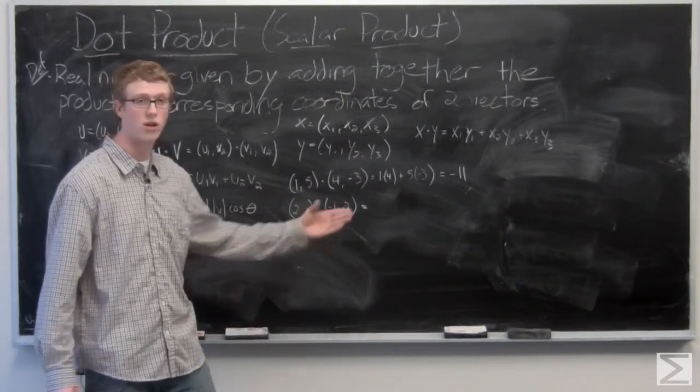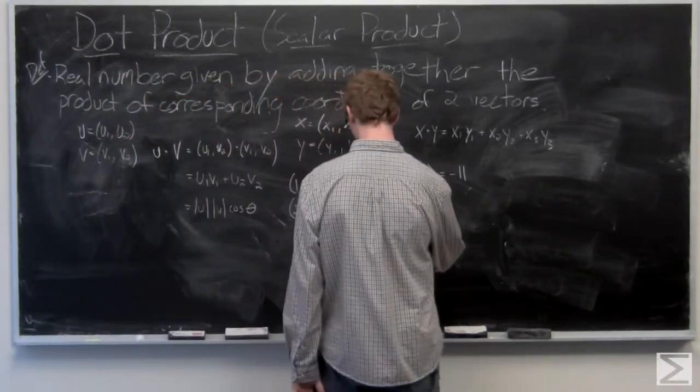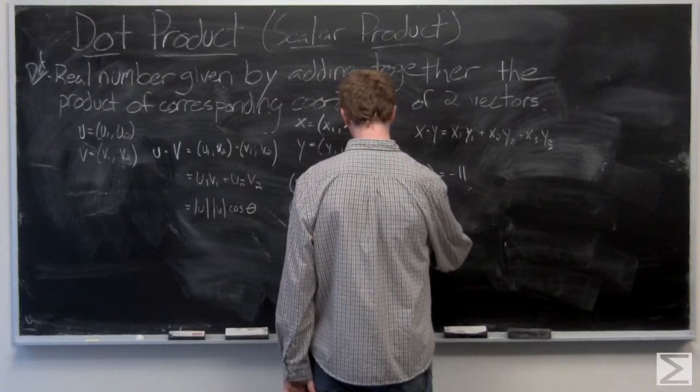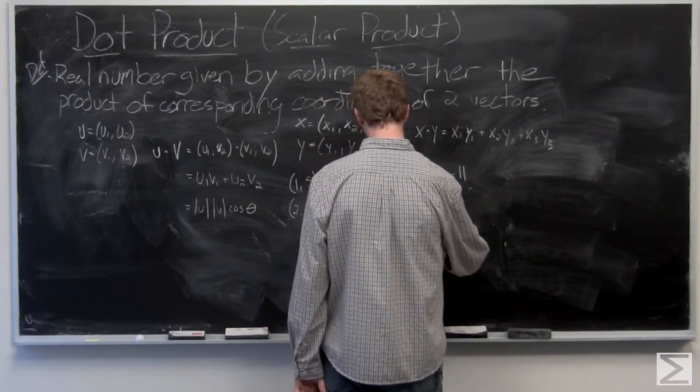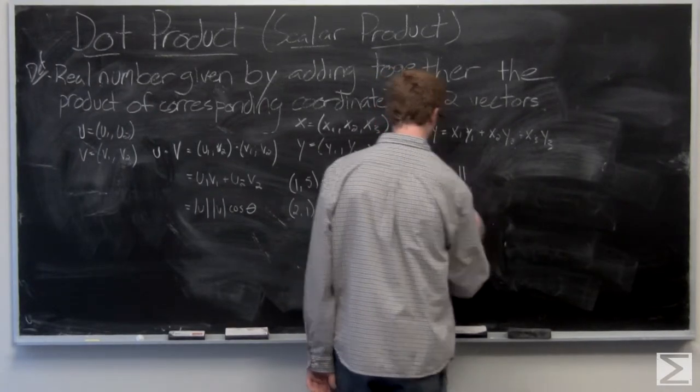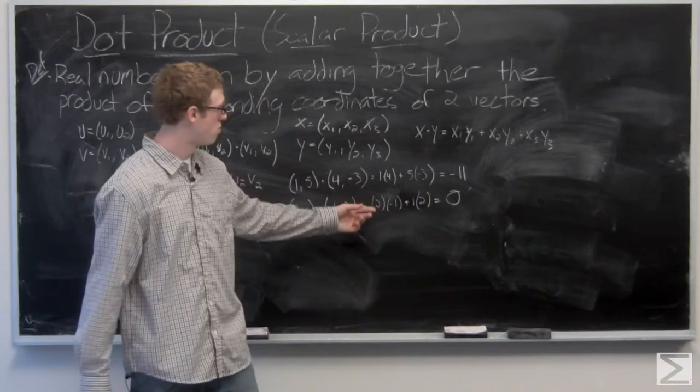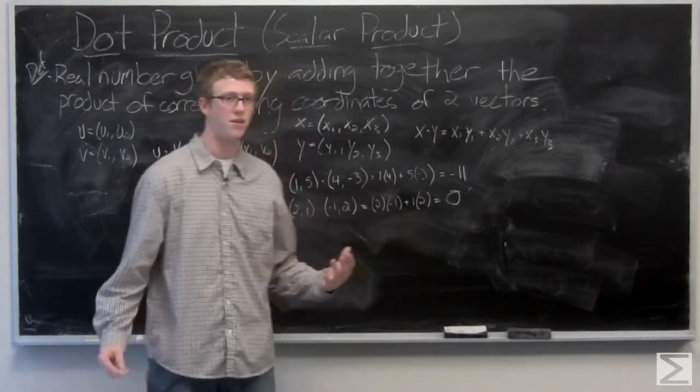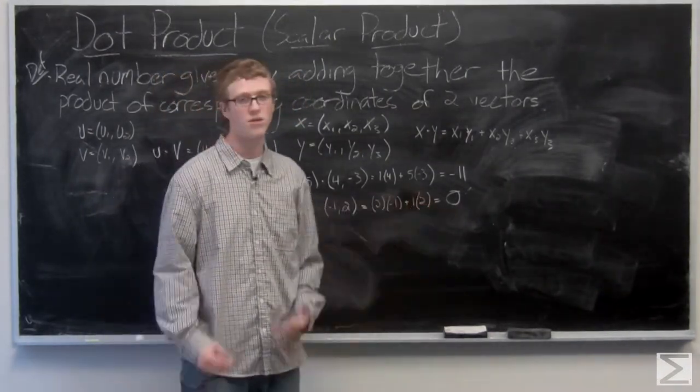And you're going to have two times negative one, that's negative two, one times two is going to be zero.